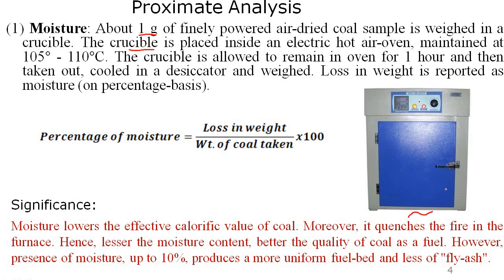The sample is heated in the hot air oven at a temperature of 105 to 110°C, which causes the moisture to evaporate. Before heating we weigh it, and after one hour of heating we take it out and cool it in a desiccator. A desiccator is an apparatus that does not allow any moisture to enter inside; it is used to protect chemicals from moisture.